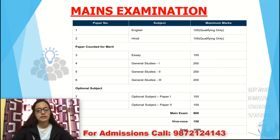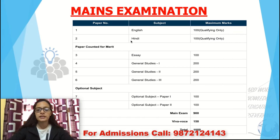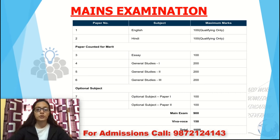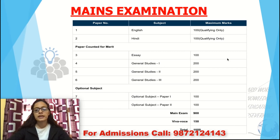Let's move to the Main Examination. There are a total of eight papers. The first two papers are language papers — English and Hindi — each of 100 marks, and they are qualifying in nature. You must qualify both. Many people take these lightly because they are qualifying, but that is a mistake — sometimes candidates don't qualify, so preparation for these is very important.